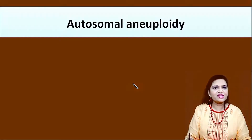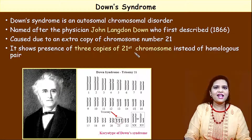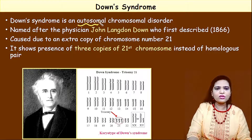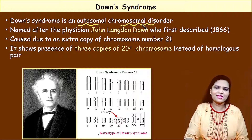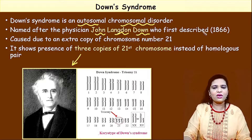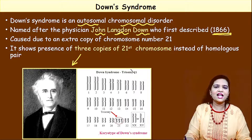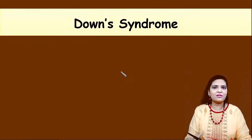Let's move on to the first category — autosomal aneuploidy. The first very important example is Down syndrome. Down syndrome is an autosomal chromosomal disorder, named after physician John Landon Down in the year 1866. All these chromosomal disorders are named after the physician or scientist who first discovered the problem.